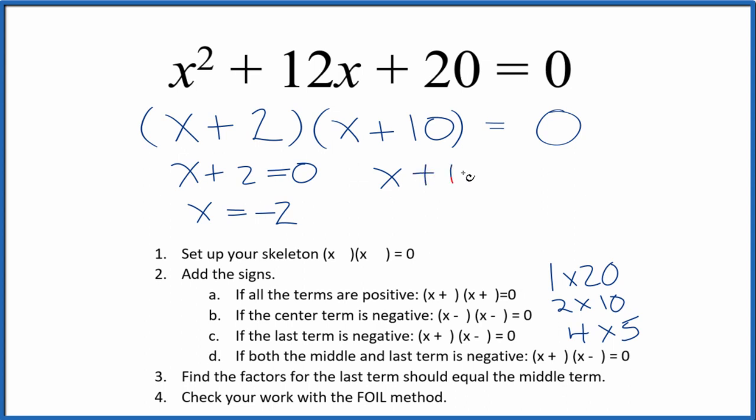Over here, x plus 10 equals 0. Add negative 10 to both sides. x equals negative 10. So if we put negative 2 in for x and we did the math, this side would all equal 0. Likewise, if we put negative 10 in for x and we did the math, this side would equal 0.